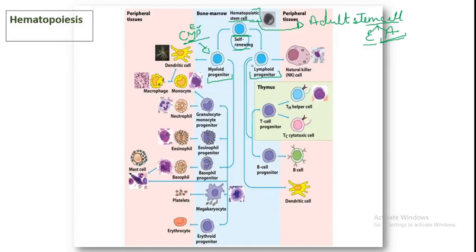The direction of stem cell differentiation is controlled by transcription factors, genes, and genetic changes — it is not a random process but is regulated based on what the body needs, whether B or T cells, or innate immunity cells like neutrophils. The myeloid progenitor is committed to producing innate immunity cells.